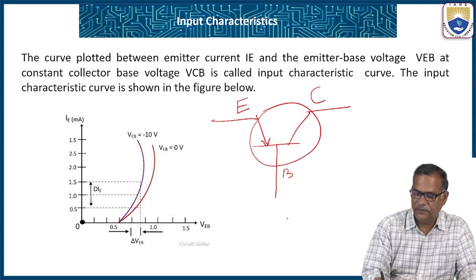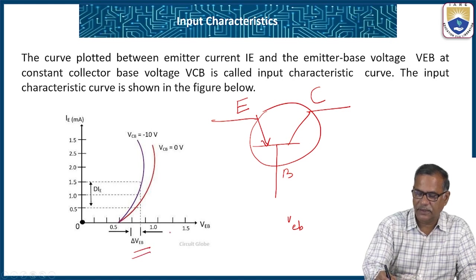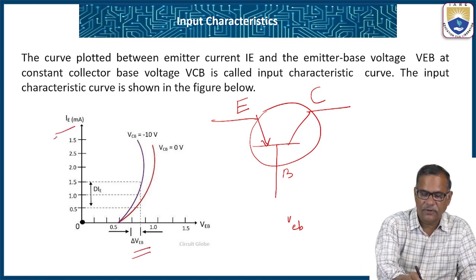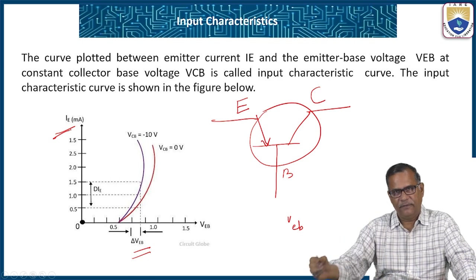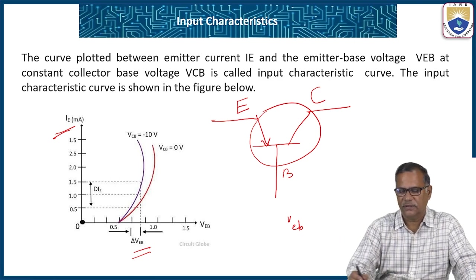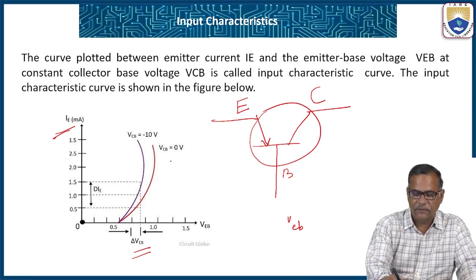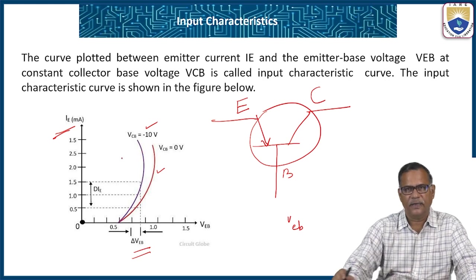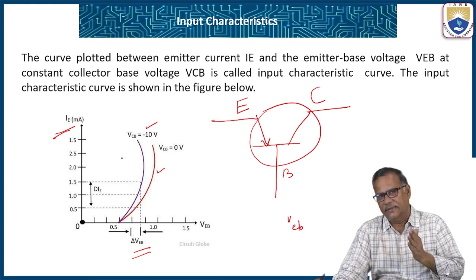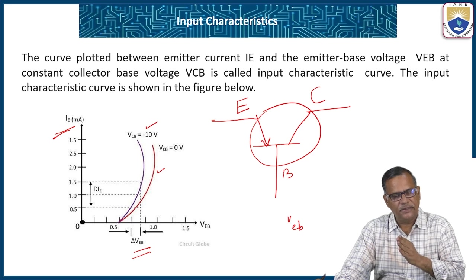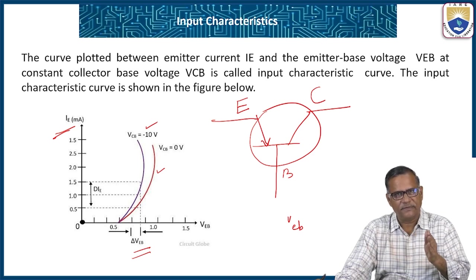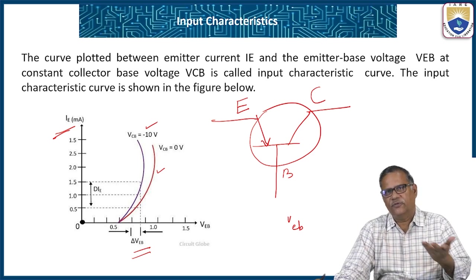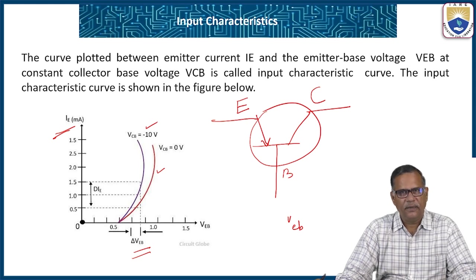For the input characteristics, the x-axis is VEB (input voltage) and the y-axis is IE (emitter current), plotted for different values of VCB (output voltage). When VCB equals zero, we get one characteristic curve; when VCB equals minus 10 volts, the curve shifts towards the left. As reverse bias increases, the curves shift left, indicating an increase in emitter current.